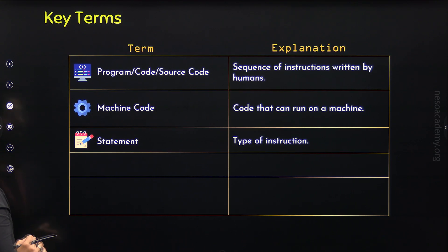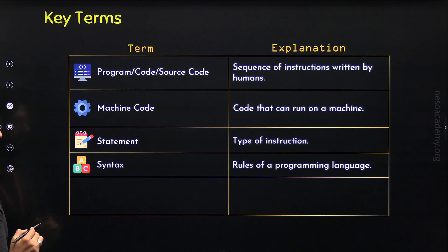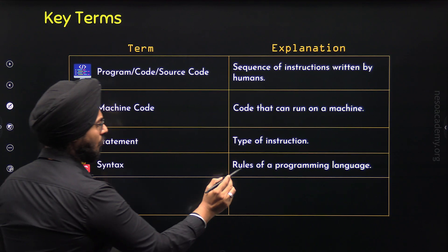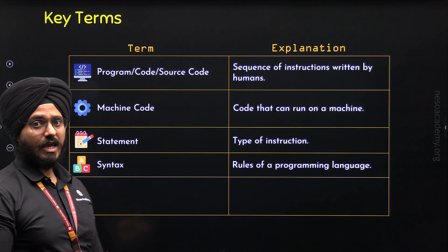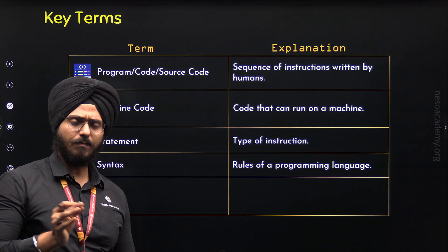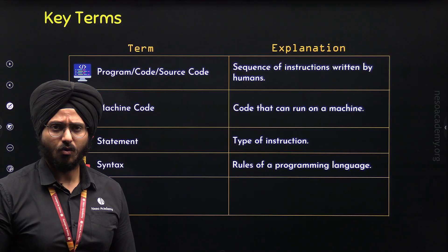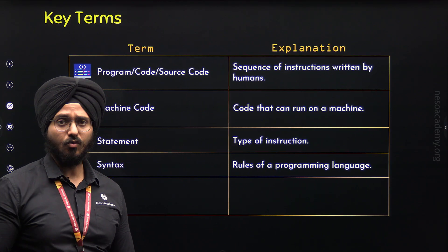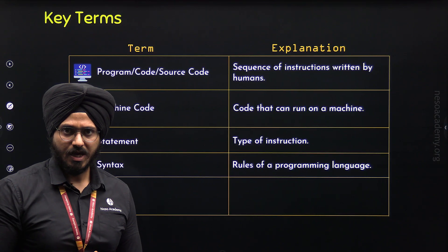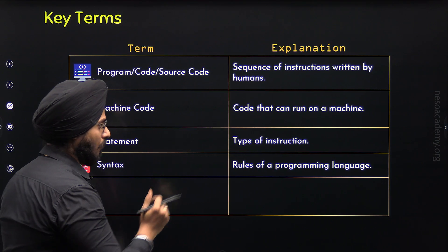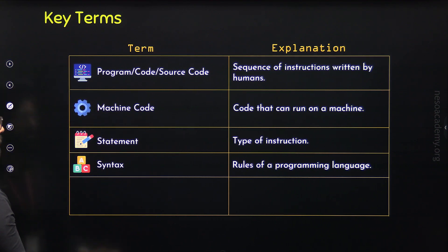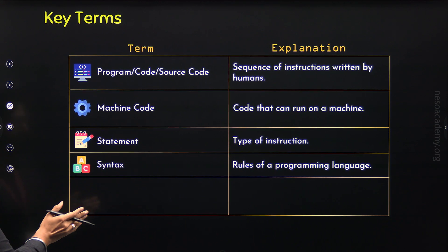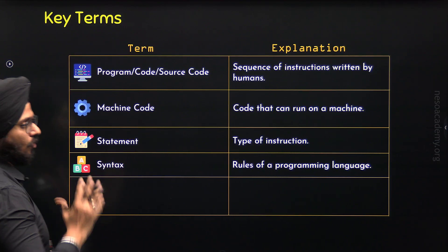Now here comes the fourth term, which is Syntax. Syntax refers to the rules of a programming language. There are many different rules in a programming language in general, and in C++ we have a set of rules which we need to follow as programmers. We will learn these rules as we proceed, but right now we need to understand that these rules are called Syntax.